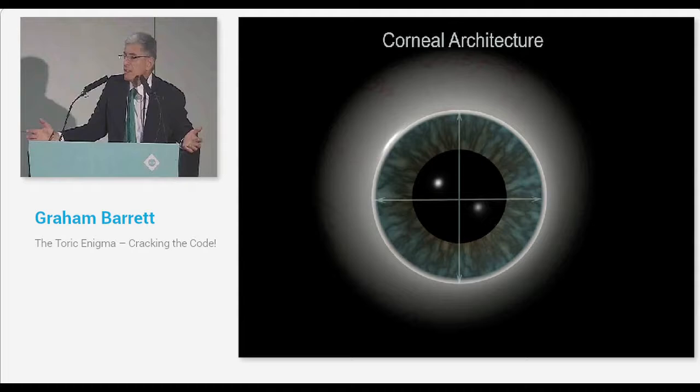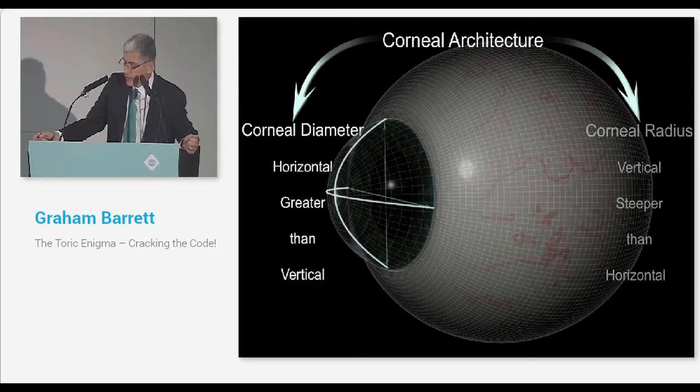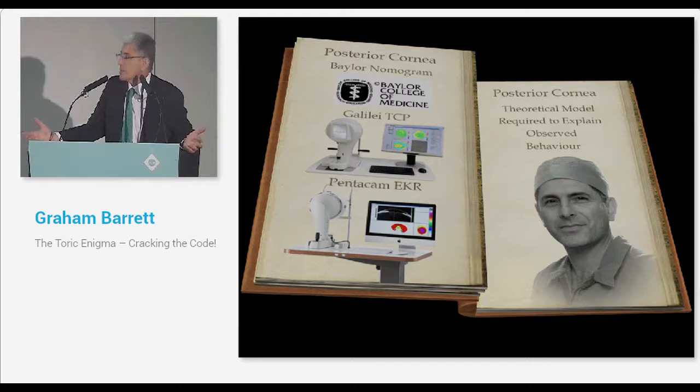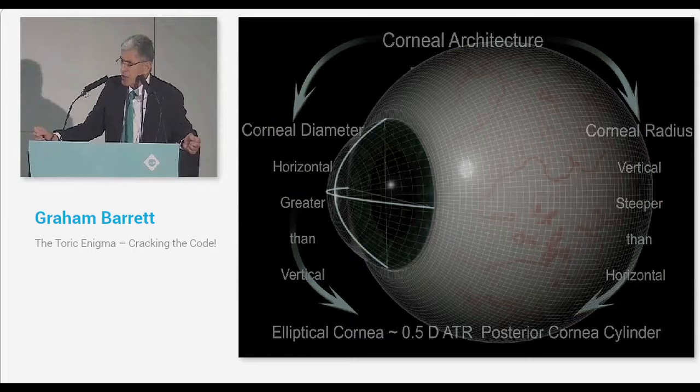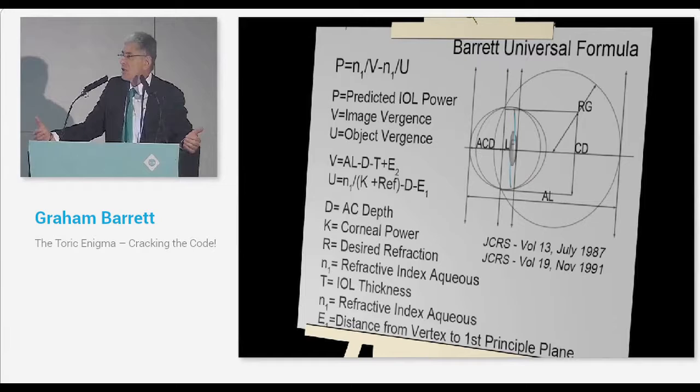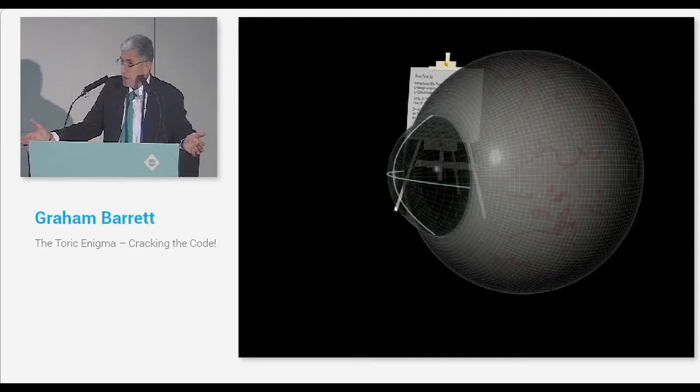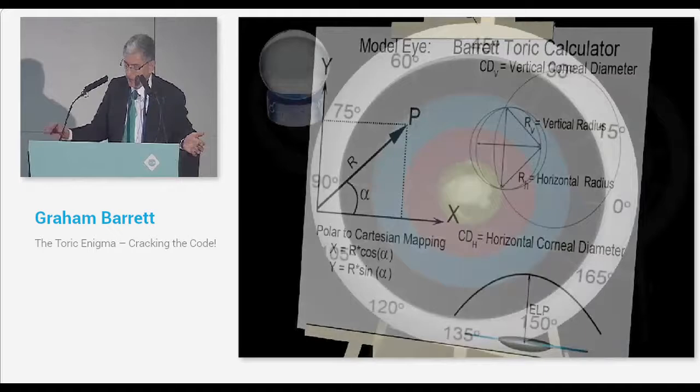The solution is quite simply that the cornea has a unique architecture. The horizontal diameter is always greater than the vertical. This means that the vertical radius is steeper than the horizontal radius. Therefore, the elliptical cornea explains a half diopter of against-the-rule astigmatism. My IOL calculation formula, the Universal 2, calculates a ciliary diameter. I can use that formula to calculate a vertical radius and a horizontal radius, and this allows me to predict the posterior corneal astigmatism without actually measuring it.